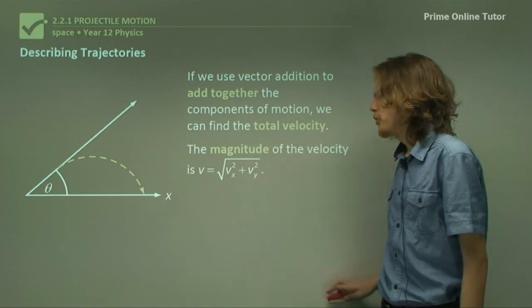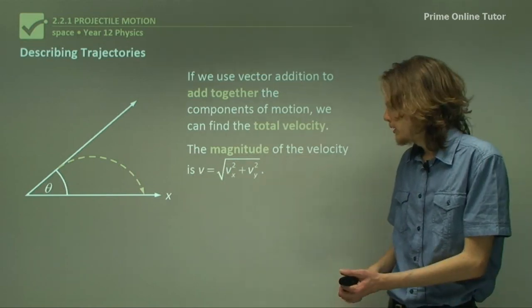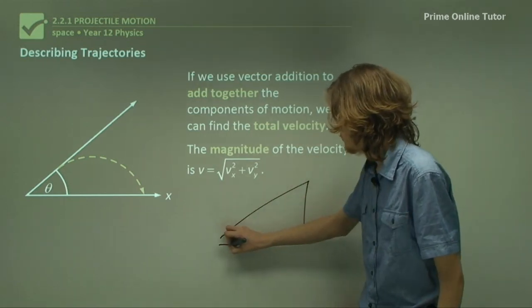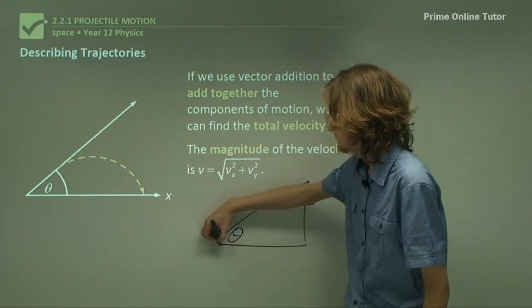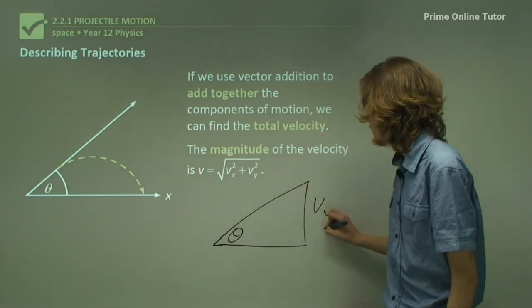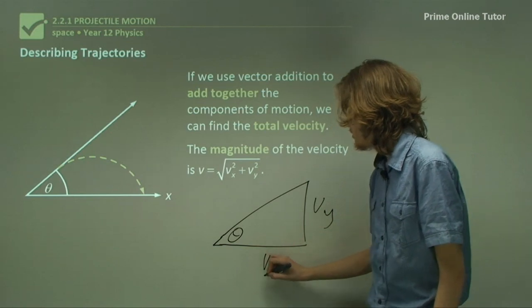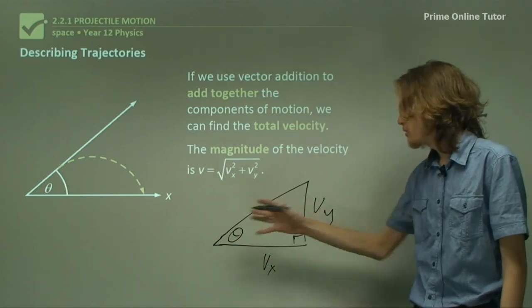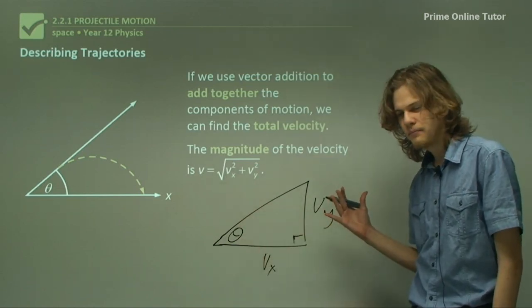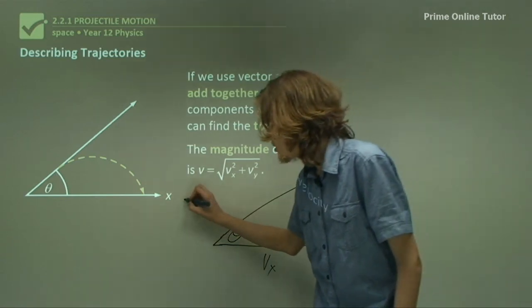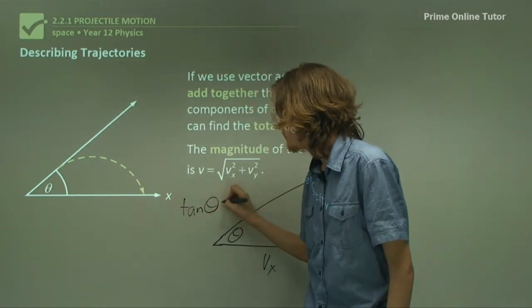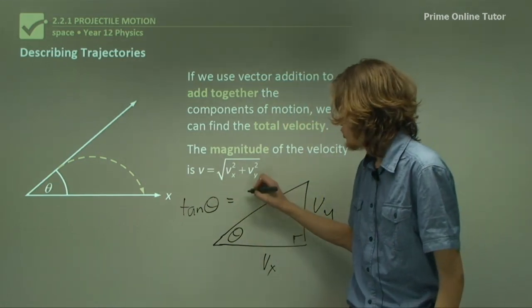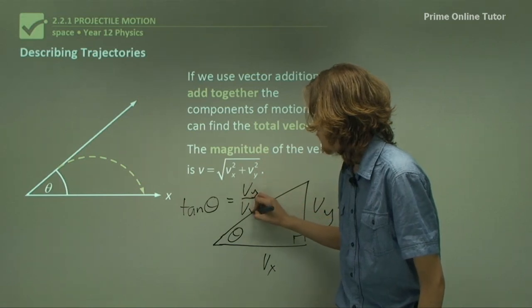That's all well and good, but what about the angle? Remember, we have a right-angled triangle. We have an angle theta. We know two sides and we know trigonometry. So what expression can we give to relate these three quantities together? Tan of theta equals opposite over adjacent, which will be Vy over Vx.